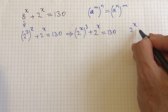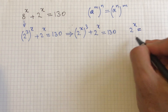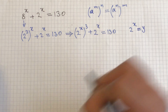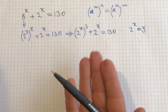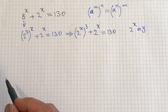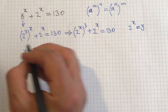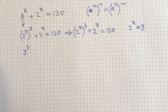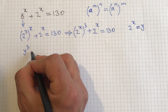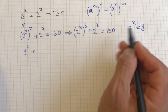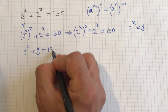Now I let 2 to the power of x equal another expression, y. I can rewrite the equation: the first term becomes y to the power of 3, and the second term is simply y, so y cubed plus y equals 130.